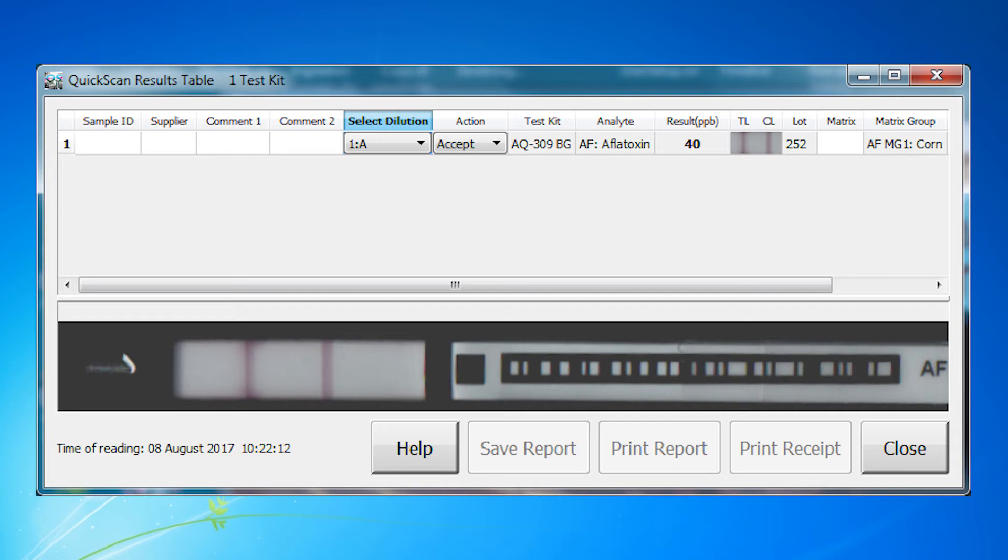If your sample results from the dilution A testing are greater than 100 parts per billion and you desire additional quantitation, you may run the dilution B protocol.